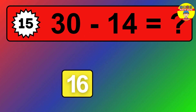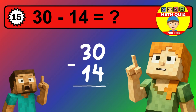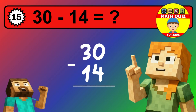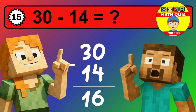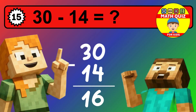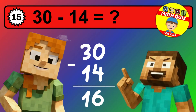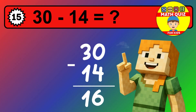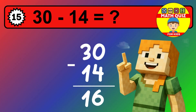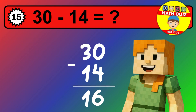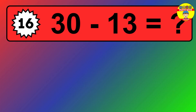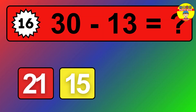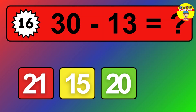We start with the units. 3 minus 5 is not possible, so we need to regroup. We take one 10 from the tens column. Now we have one tens, and the units become 13. Now we subtract. 13 minus 5 is 8. Then we go to the tens. 1 minus 1 is 0. The final answer is 8.